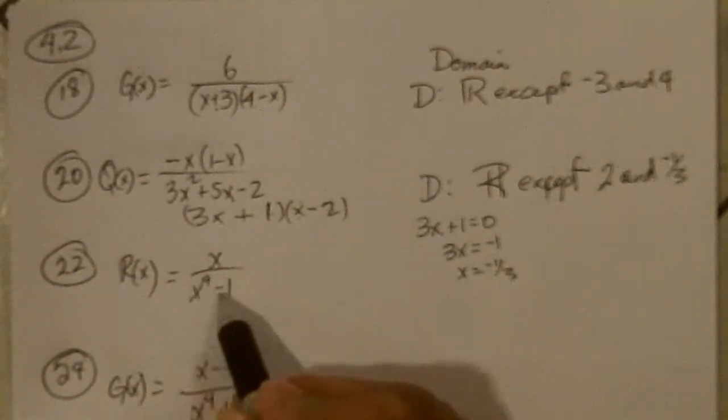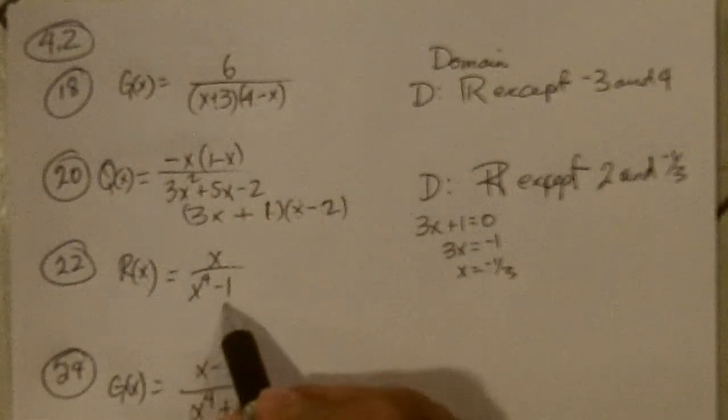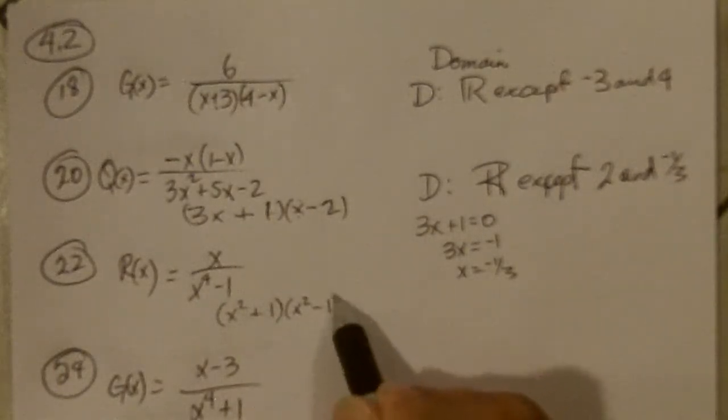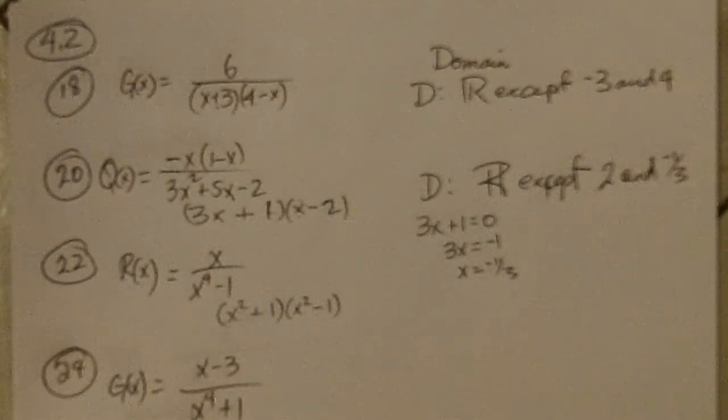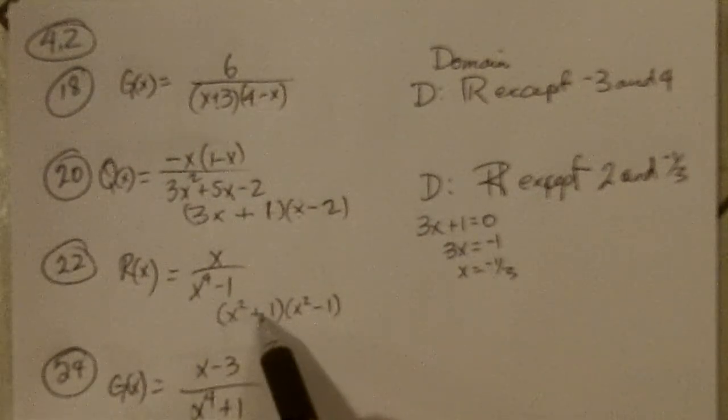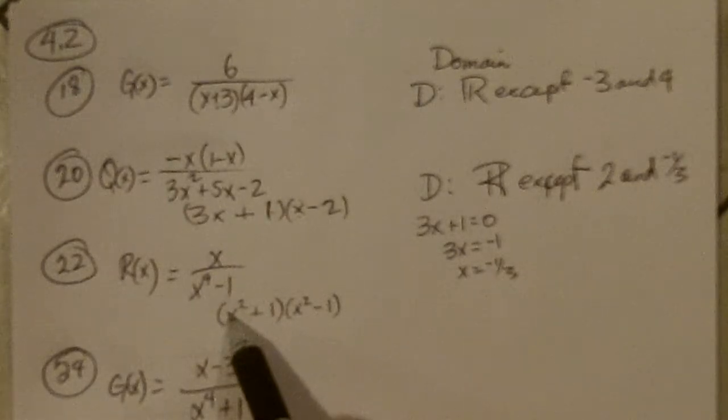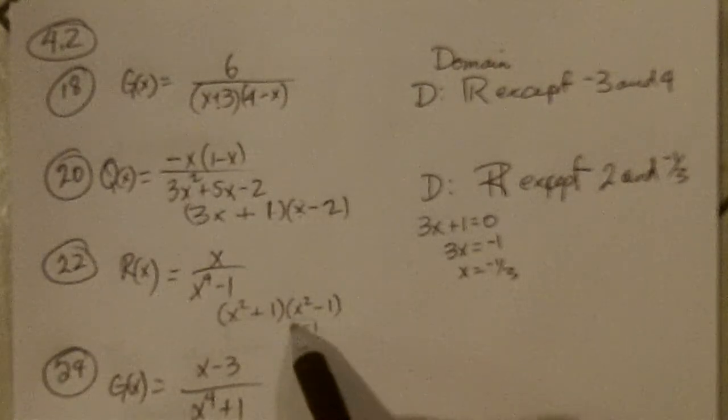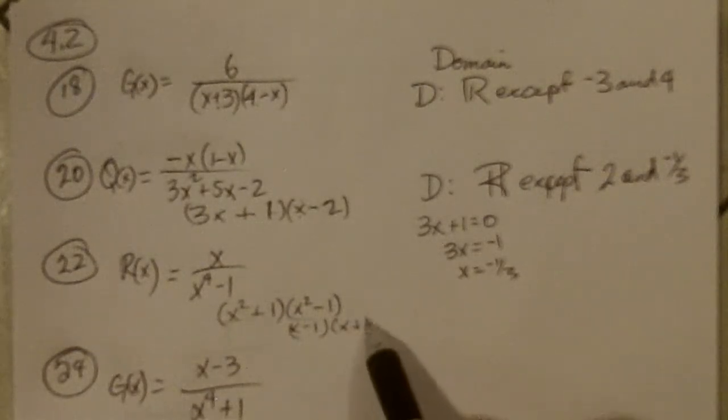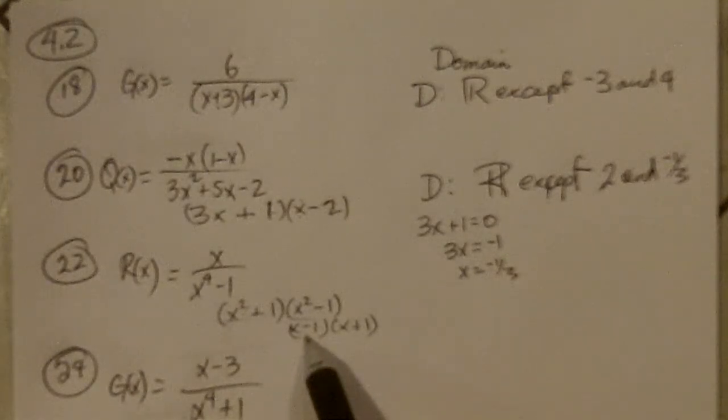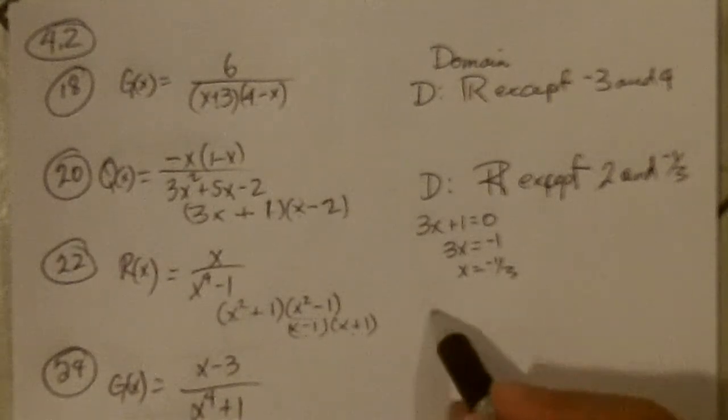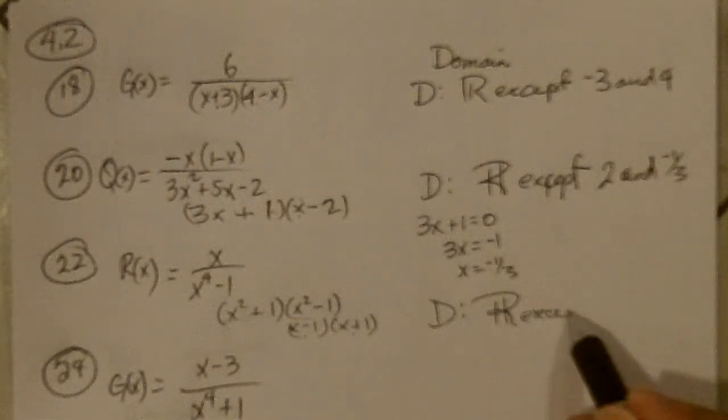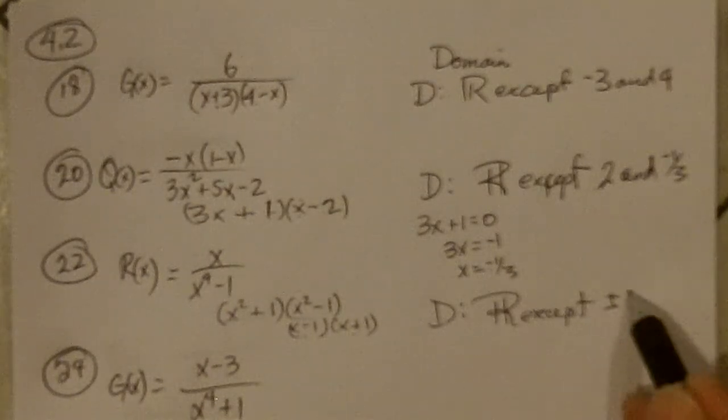This one, factor it. x to the 4th minus 1 factors to x squared plus 1 and x squared minus 1. x squared plus 1 is never 0. This is a parabola that starts at the origin, move it up 1, and it's never going to hit 0. This factors to x minus 1 and x plus 1, so we can't use 1 or negative 1. So the domain is all reals except plus or minus 1.